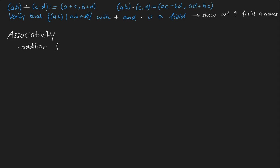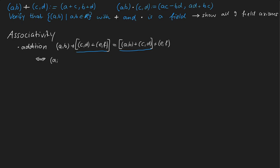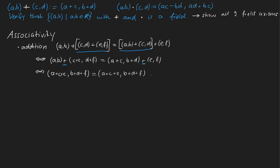We continue by proving the associativity of addition, where we have to show that the order of adding three elements together doesn't matter. First we refactor the addition for the big parentheses. The pair (A,B) remains and the inner term becomes (C+E, D+F). On the right side, applying the definition gives (A+C, B+D) with the pair (E,F) remaining. We then apply the addition one more time to merge those two pairs, and both sides of the equation are equal.